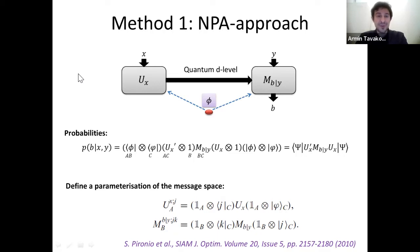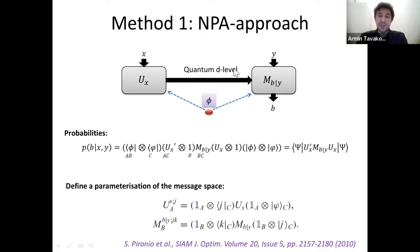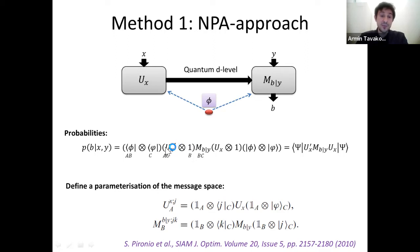The first method is based on the Navascués-Pironio-Acín (NPA) hierarchy. The idea is as follows. Since we have no limit on the dimension of the entanglement, we can imagine the encoder is using a unitary process, perhaps with some auxiliary dimension, and then some piece of this encoding produces a d-dimensional quantum system that is sent over the channel. Some measurement then produces outcome B. We can envision the probabilities in a form that is expanded using these effective operators — U_A and M_B — where one lives on space A (the share going to the left) and the other on space B (the share going to the right).